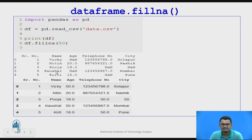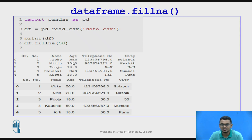Continuing with the same example, when I use the fillna function with the value 50, everywhere that data was missing is replaced with 50. You can see that the age of Wiki, which was missing in our data frame, has been replaced with 50.